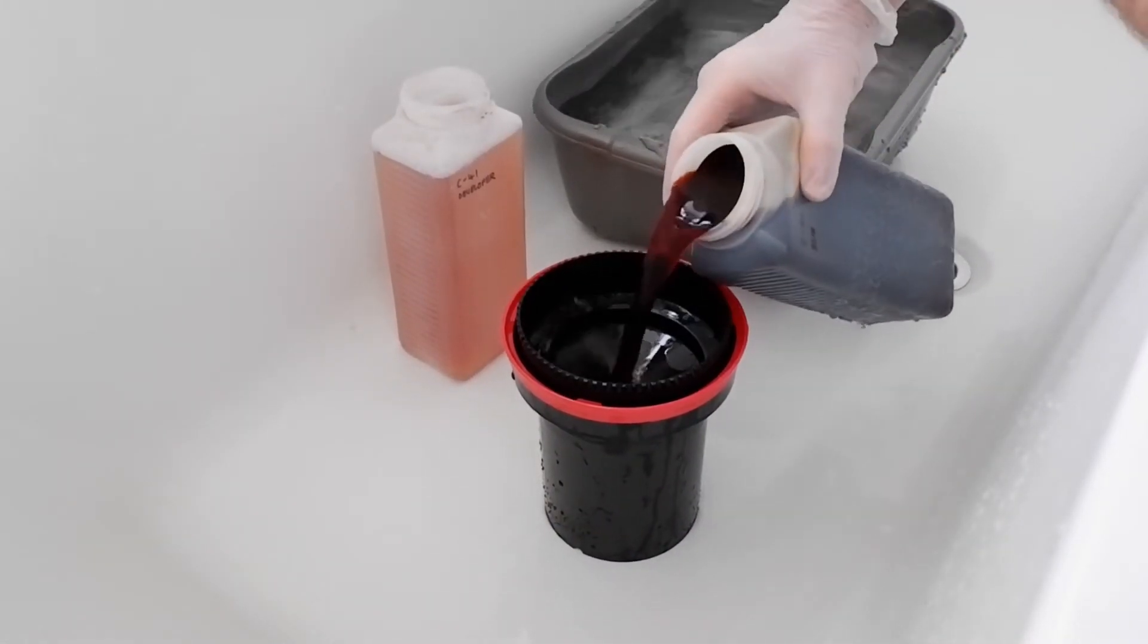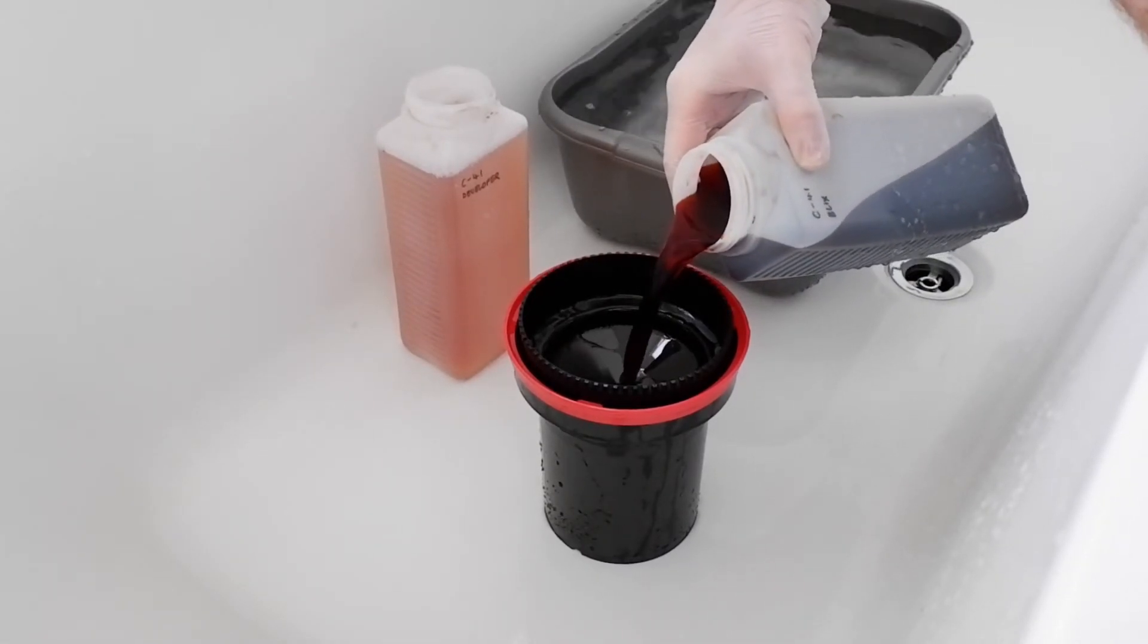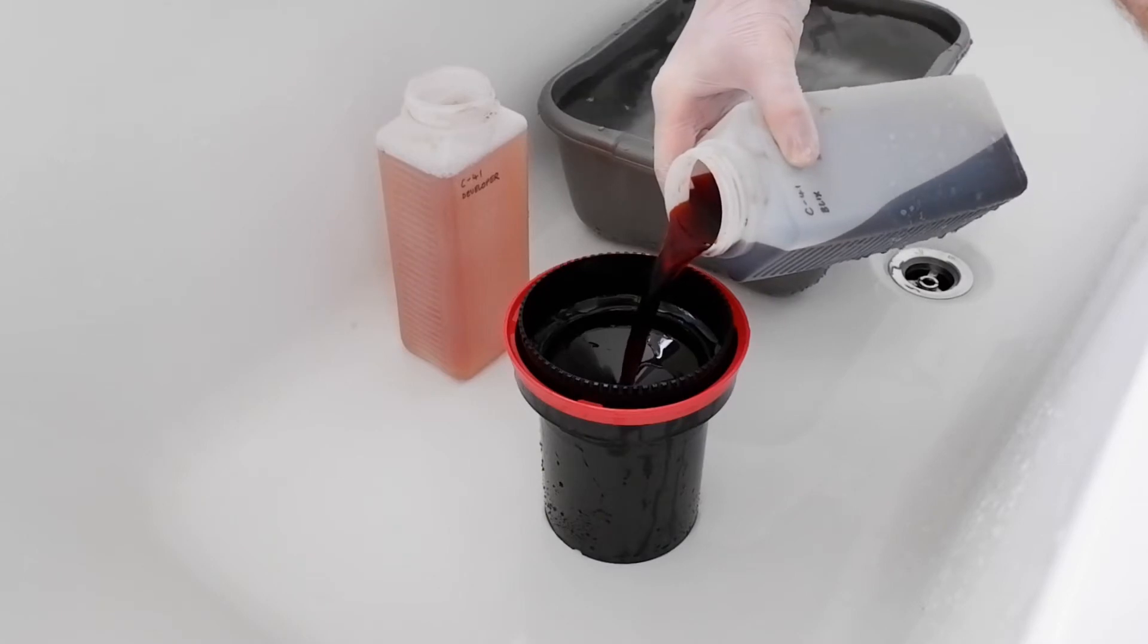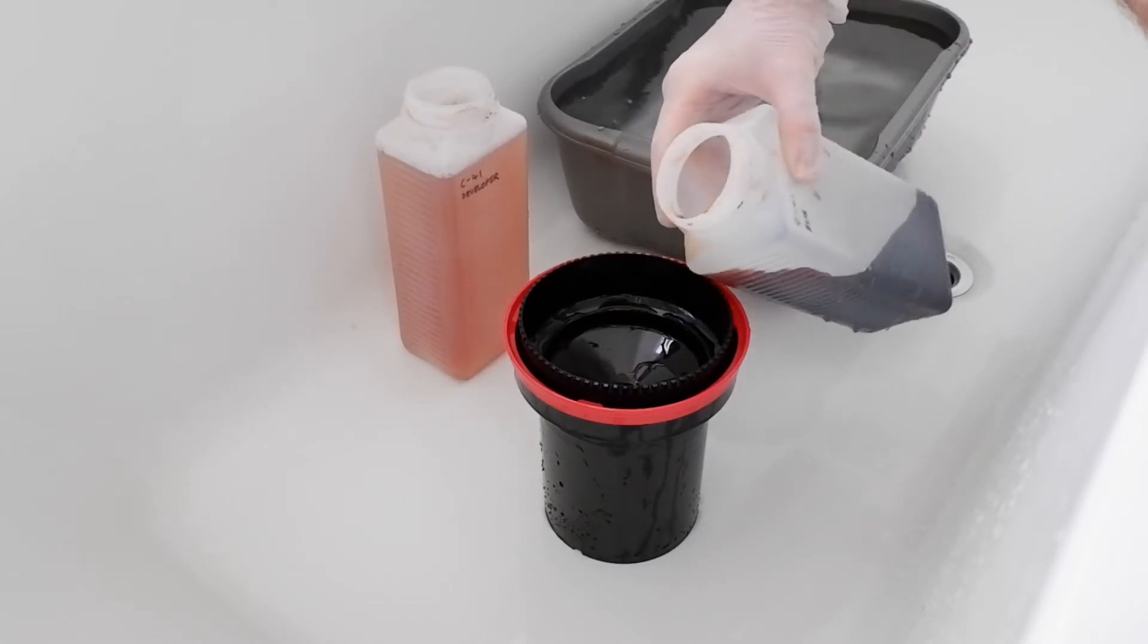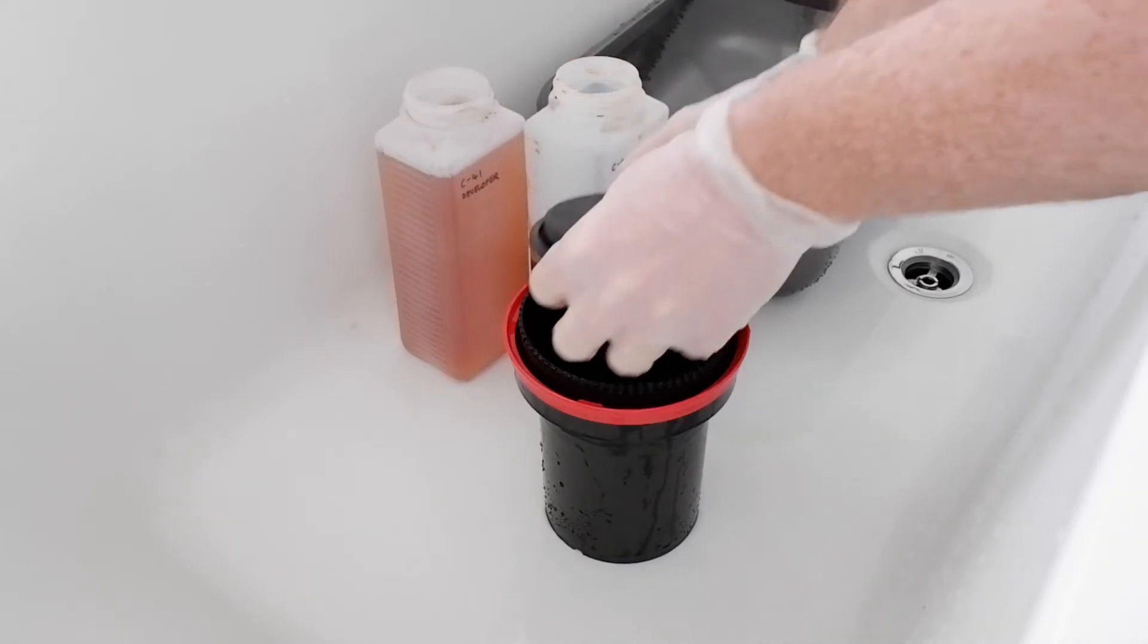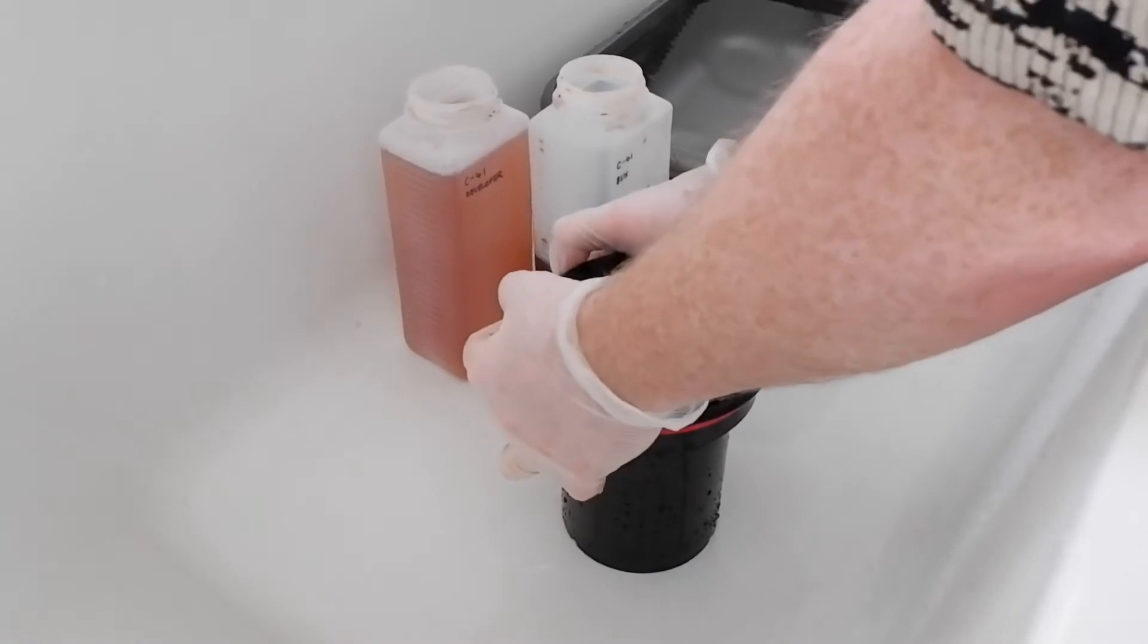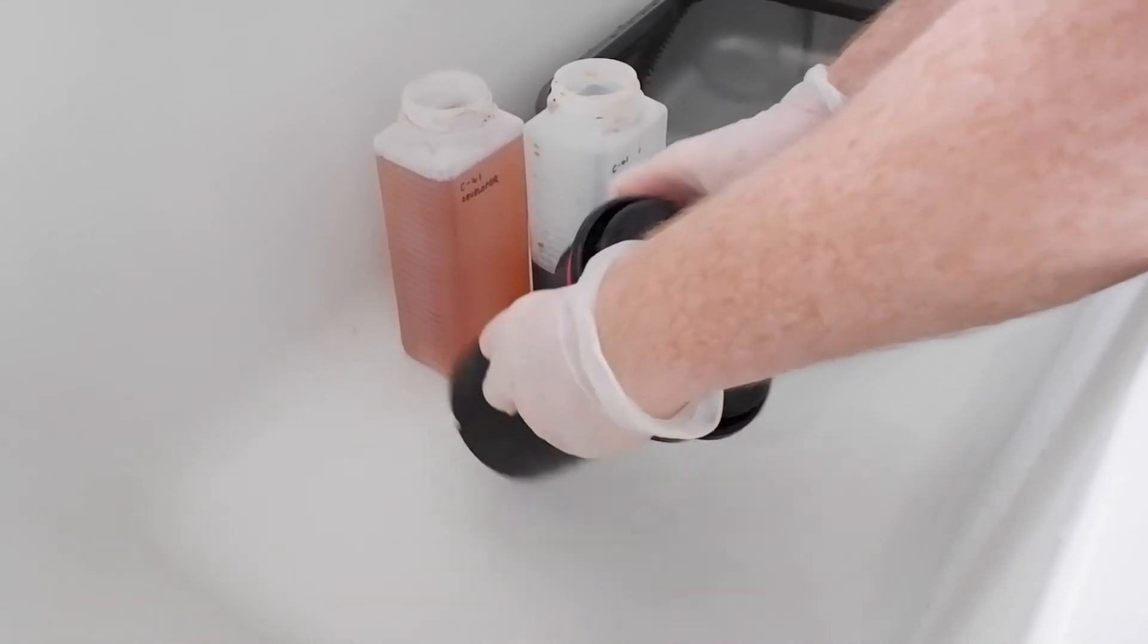As quickly as possible we then want to get the blix in. We want to try to do it as fast as we can so that nothing cools down too much. The blix temperature is less important, not quite as sensitive as the developer is, but it's still good to have it at a consistent temperature. Once you've done that, get the lid on and start agitating it. This process is going to be eight minutes with an agitation every 30 seconds.